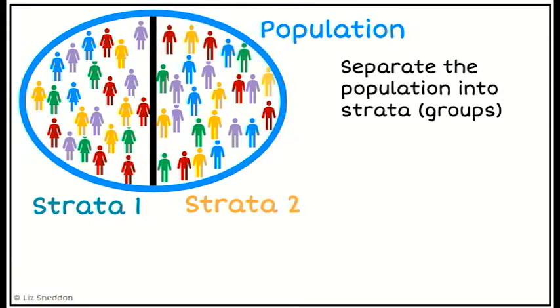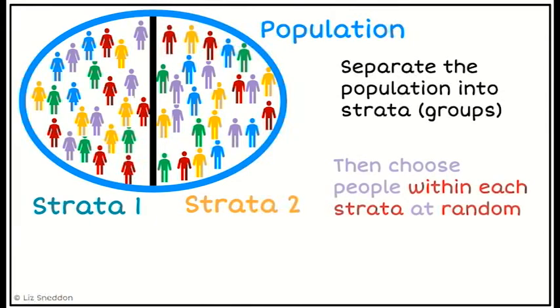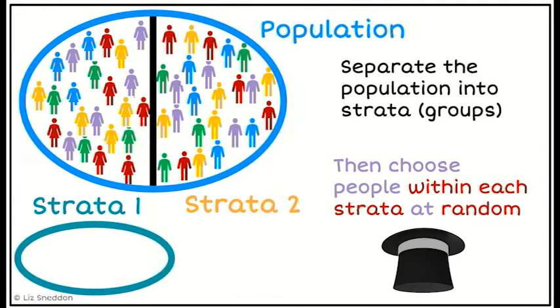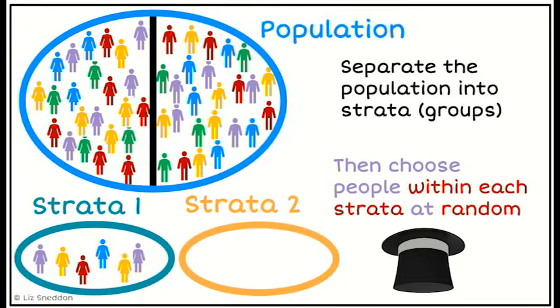So once I've done that, then within each of those strata, within strata 1, within the females, I'm going to take a random sample of those people. And within strata 2, I'm going to take a random sample of that group of people.